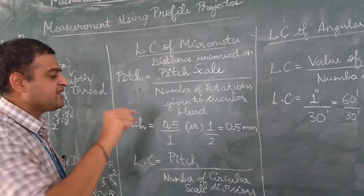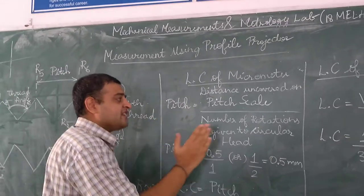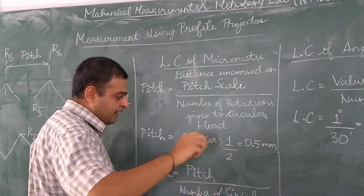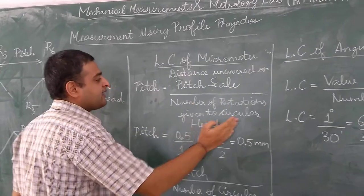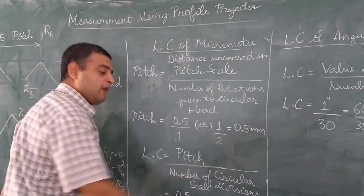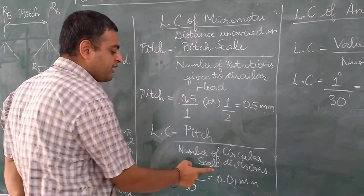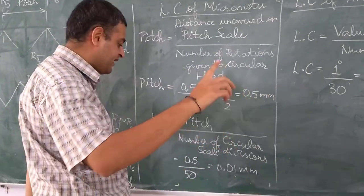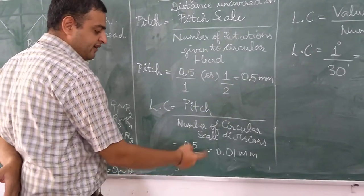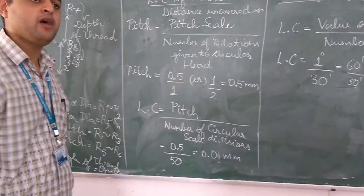The micrometer has one fixed pitch scale and one rotating circular scale. For one rotation, the value uncovered on the pitch scale is noted. In our case, it is 0.5 mm — for every 360-degree revolution, 0.5 mm is uncovered on the pitch scale. So the pitch value of the micrometer is 0.5 mm. The least count is given by pitch divided by number of circular scale divisions. Our micrometer has 50 divisions, so the least count is 0.5 / 50 = 0.01 mm.